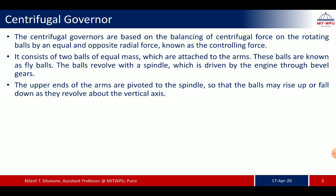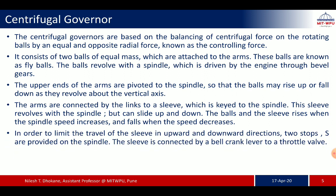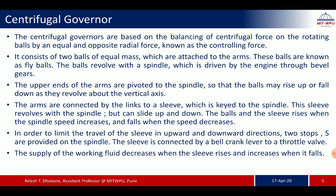The balls may rise up or fall down as they revolve about the vertical axis according to the speed. The arms are connected by links to a sleeve which is keyed to the spindle. The sleeve revolves with the spindle but can slide up and down. The balls and sleeve rise when spindle speed increases and fall when speed decreases. Two stops are provided on the spindle to limit the travel of the sleeve. The sleeve is connected by a bell crank lever to a throttle valve, so the supply of working fluid decreases when the sleeve rises and increases when it falls.